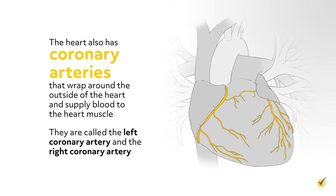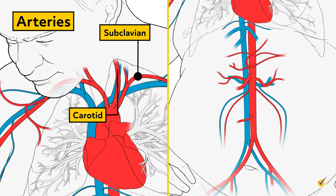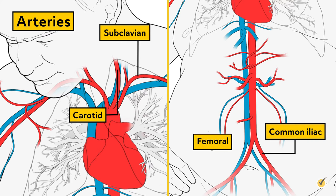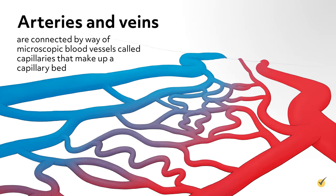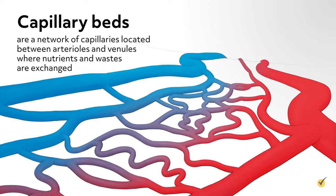The heart also has coronary arteries that wrap around the outside of the heart and supply blood to the heart muscle — the left coronary artery and the right coronary artery. Other major arteries in the body include the carotid artery, subclavian artery, common iliac artery, femoral artery, and renal artery. As we move further from the heart, arteries become arterioles, and arterioles become very fine capillaries. Arteries and veins are connected by microscopic blood vessels called capillaries that make up a capillary bed, where nutrients and wastes are exchanged.